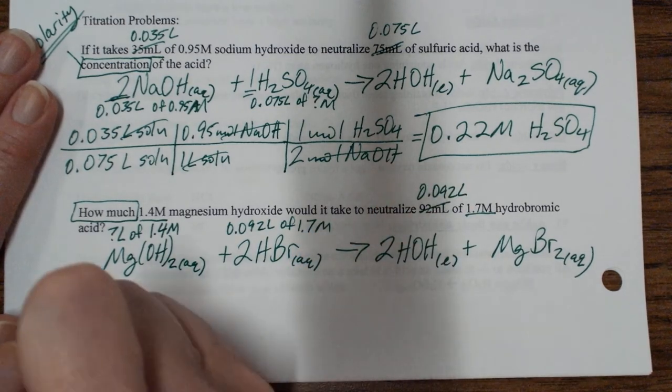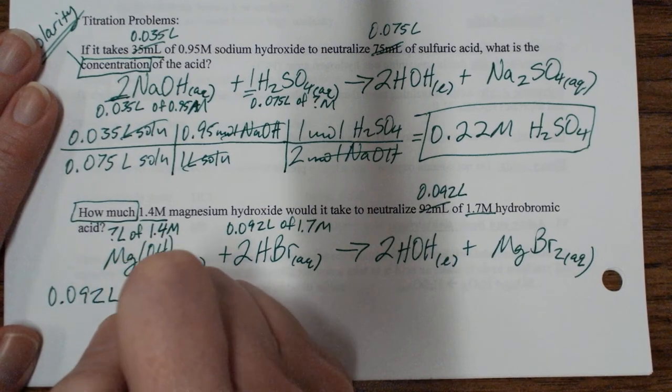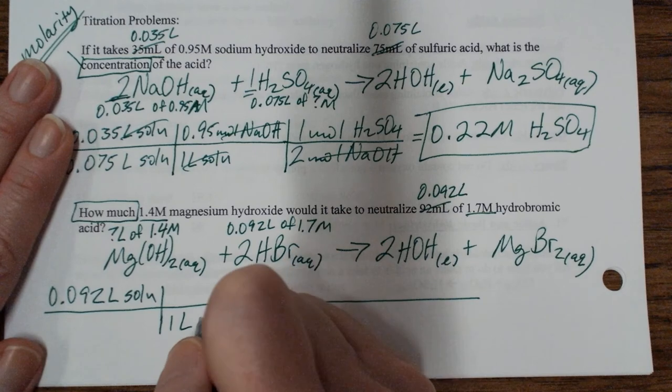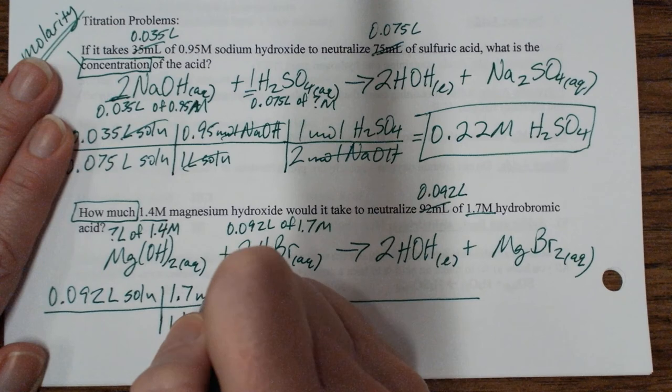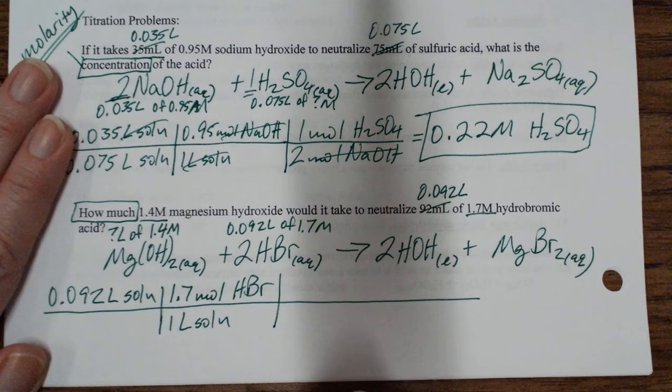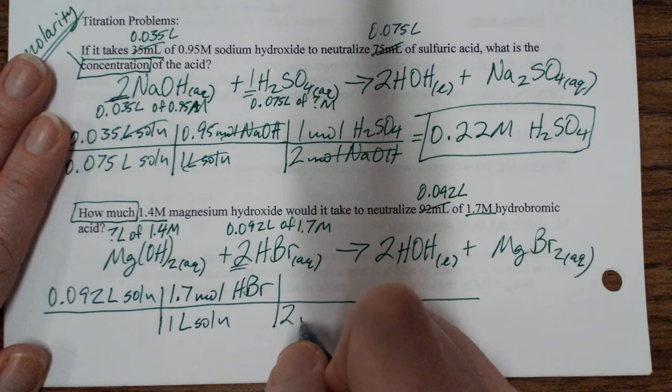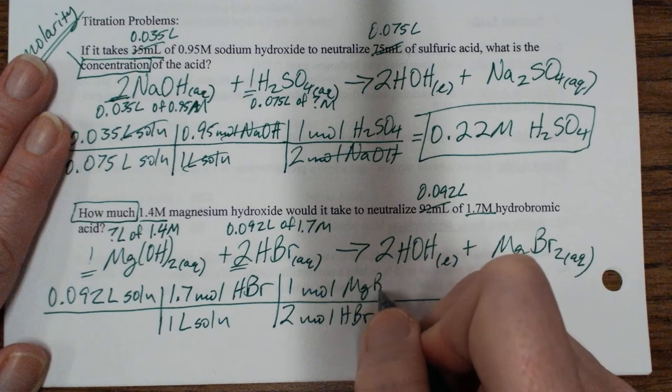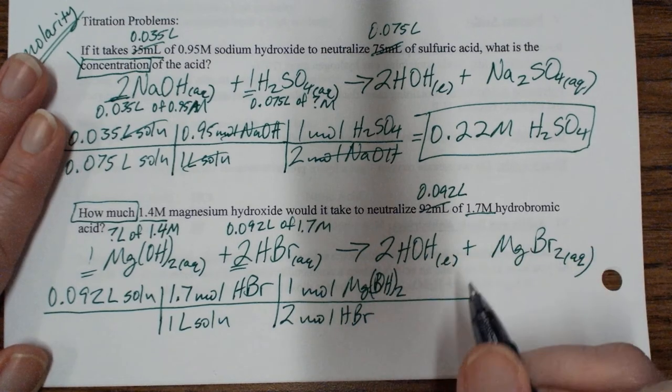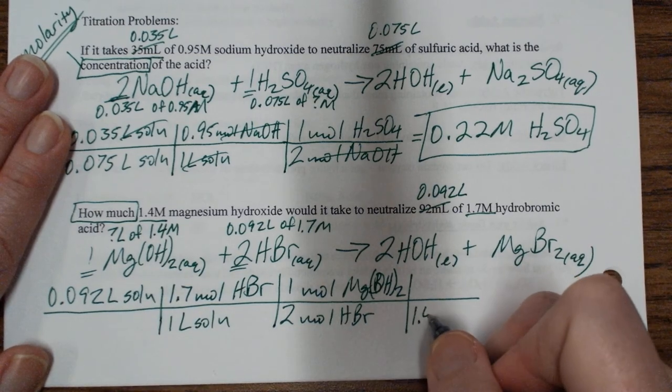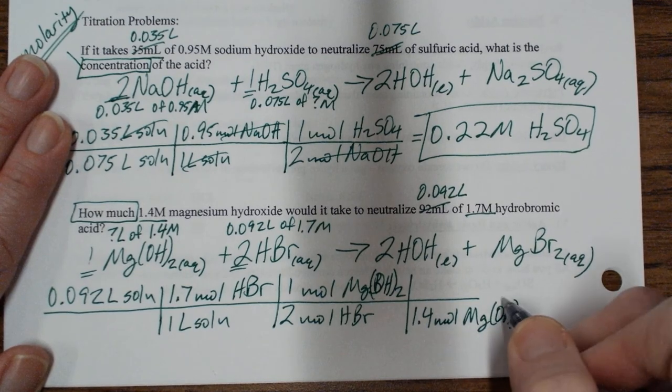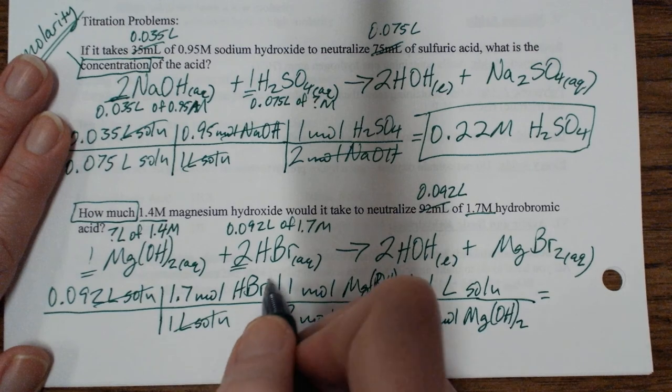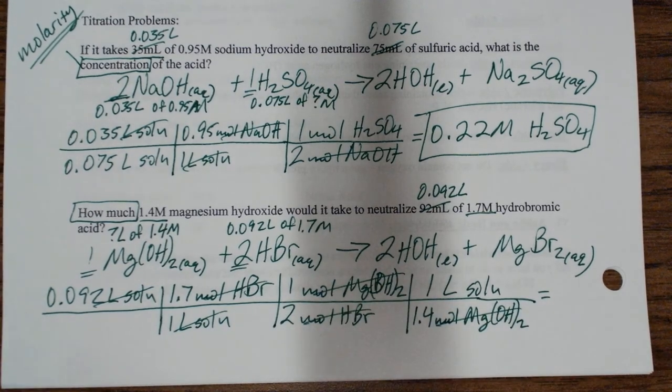So I start with a thing I know everything about. 0.092 liters of my acidic solution. And for every one liter of that solution, you have 1.7 moles of acid. For every 2 moles of your acid, you require 1 mole of your base. And I have the molarity of that base. So for every 1.4 moles of that base, I have 1 liter of solution, basic solution. So then my liter of solution canceled, moles of acid, moles of base. I'm left with liters of basic solution. So I just stick that in my calculator.